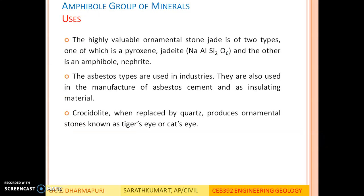The uses of amphibole group of minerals: the highly valuable ornamental stone jade is of two types — one is pyroxene jadeite, and the other is amphibole nephrite. So both jadeite and nephrite are used as ornamental stones. The amphibole group is fibrous in nature; one of the main minerals is asbestos. Asbestos types are used in industries, in the manufacture of asbestos cement, and as insulating material due to its high heat-resistant capacity. Crocidolite, a type of mineral in the amphibole group, when replaced by quartz, produces the ornamental stone known as tiger's eye.